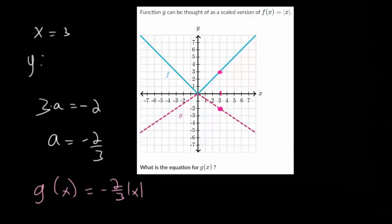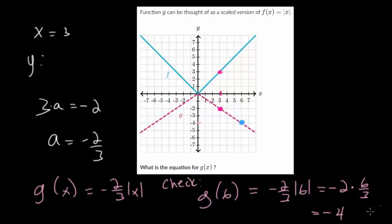But we want to check this and make sure that it's correct. So find another clean point, let's say, right there. And if we plug in 6, we should get back negative 4 is our answer if this worked. So we have minus 2 thirds times the absolute value of 6, which should just be minus 2 times 6 over 3, which simplifies to 2. And you have minus 2 times 2, which is negative 4. So when we checked it, it did work. We got back the y value we expected, which means we can feel very confident that this is the right answer.